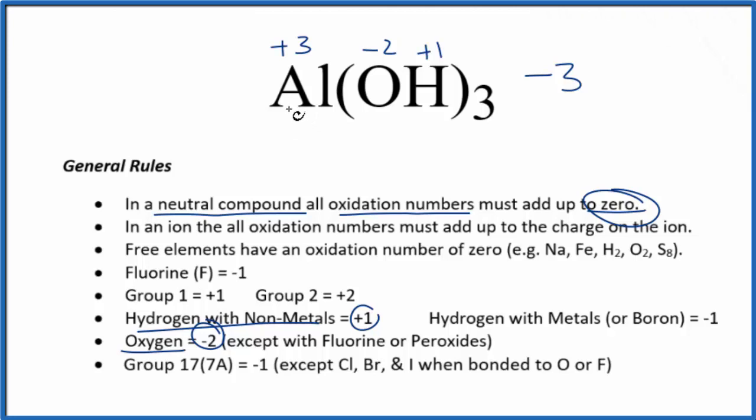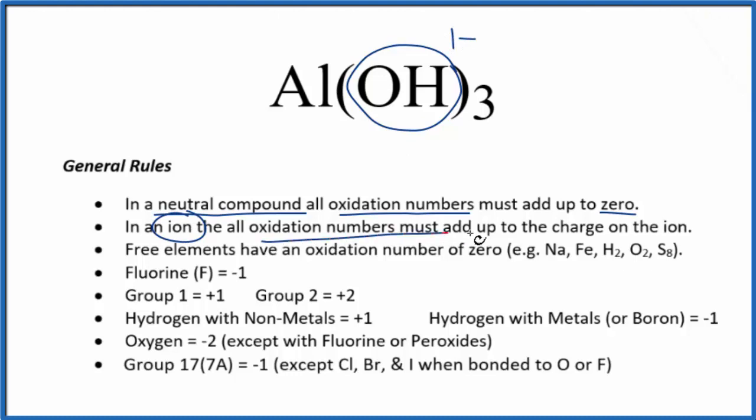There's one additional way we could do this. We could recognize that the hydroxide ion, OH here, has an ionic charge of 1-. When we have an ion, like the hydroxide ion, all the oxidation numbers add up to the charge on the ion.